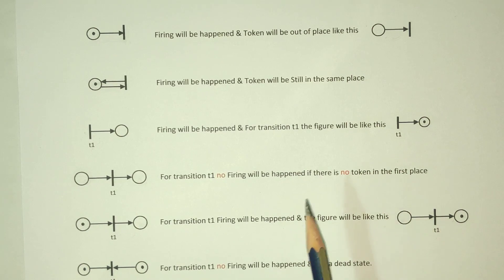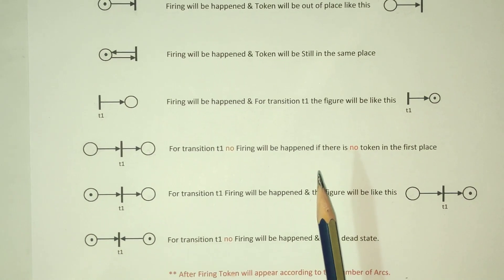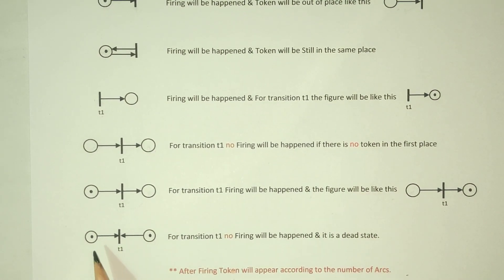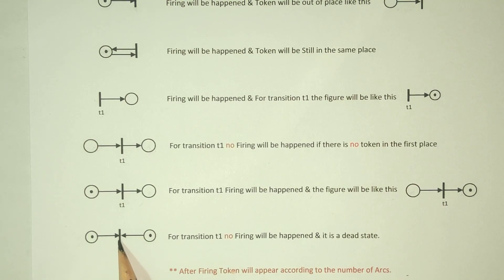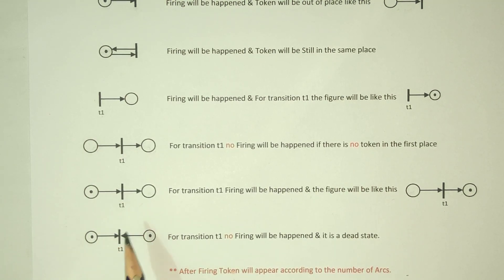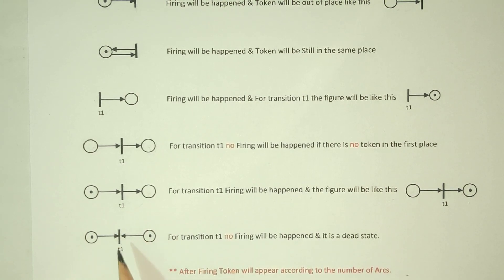You will be given the next token. A coin token will be there. This token won't be used, and to do the transition to the place, this token will become the same. We have the firing situation. This is the dead state — we have to talk about dead state.